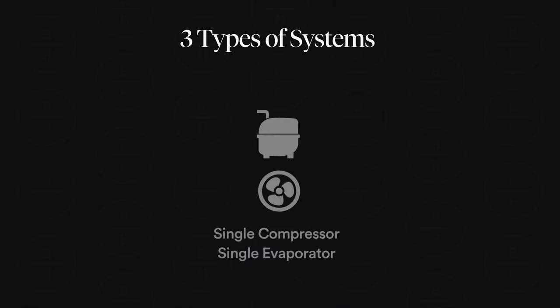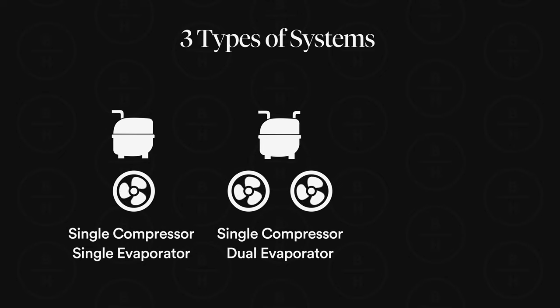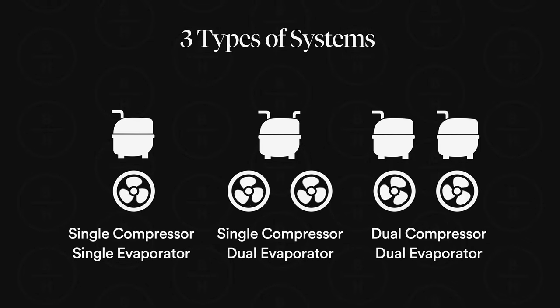We've got a couple of different types of compressors and evaporators. We have a single compressor, single evaporator — a compressor is just a fancy name for a pump; all it does is pump refrigerant. We also have a single compressor, dual evaporator. And then we also have a dual compressor, dual evaporator. An evaporator is what makes the unit get cold.